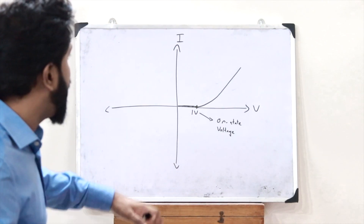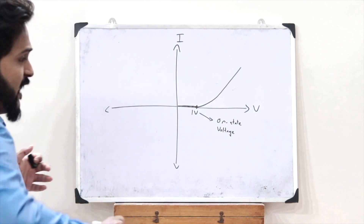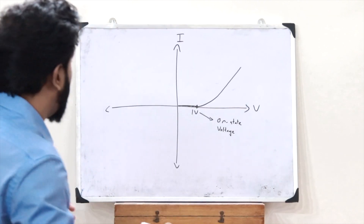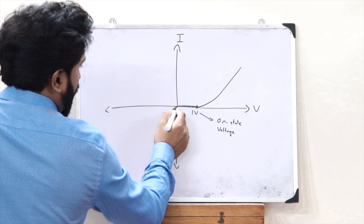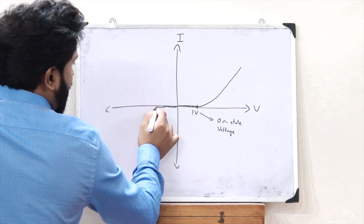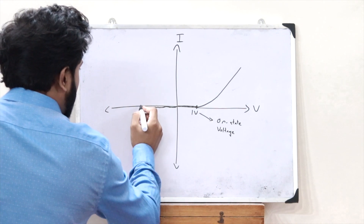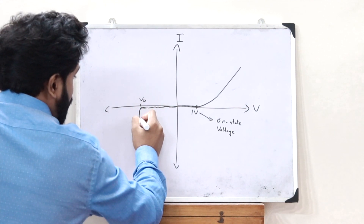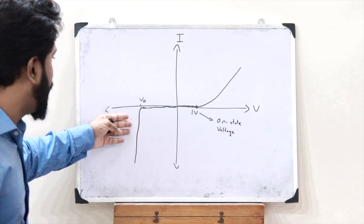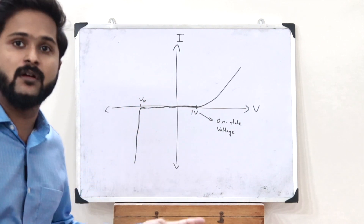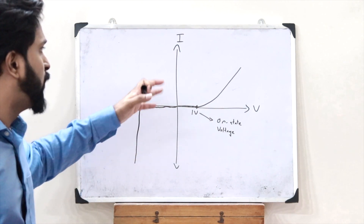Now let us see the condition where the particular power diode is connected in the reverse biased condition. In the reverse bias condition the anode is negative with respect to the cathode. When the voltage is increased in the reverse bias condition, we observe that the current does not increase, but as the voltage increases further you can see a small increase in current which is the leakage current. After a particular breakdown voltage, a huge current flow is observed — a large amount of current starts flowing. This is the point where we say that breakdown has occurred, and this is the breakdown voltage of this particular power diode.